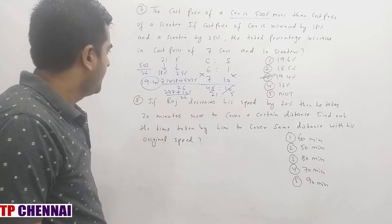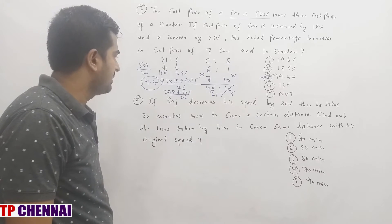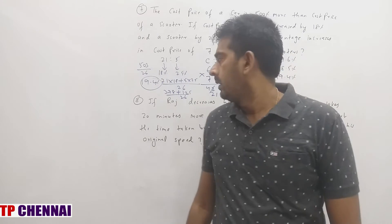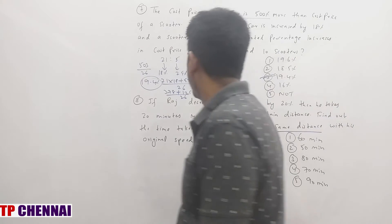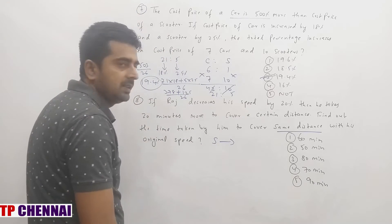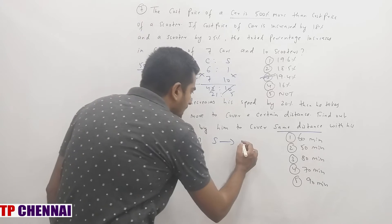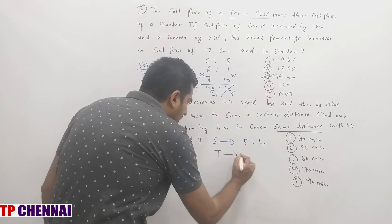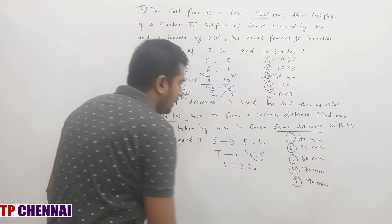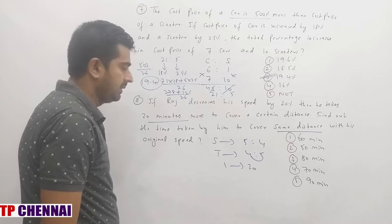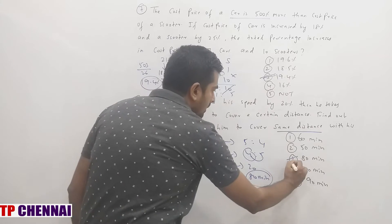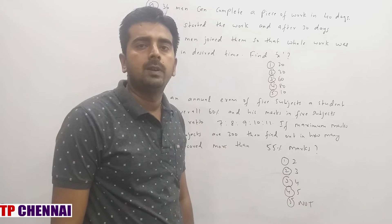Eighth question: If Raj decreases his speed by 20% and it takes 20 minutes more to cover a certain distance, find the time taken to cover the same distance with original speed. Distance is constant, so speed and time are inversely proportional. 20% decrease: initial speed 5, now 4, so time ratio is 4:5. The difference of 1 part = 20 minutes more, so 4 parts = 80 minutes, which is the third option.